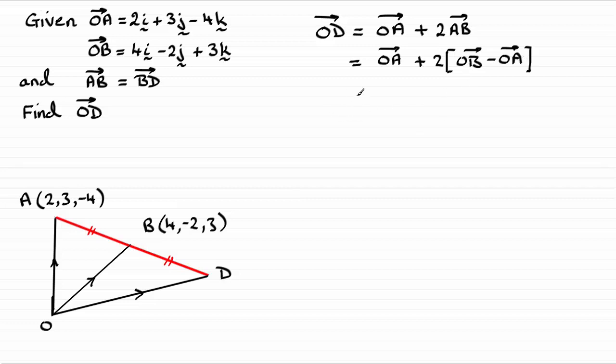Now, all I need to do is open up this bracket here, and you can see that I've got two lots of O to B, so we've got two lots of O to B, and then we've got O to A minus two lots of O to A, so it's going to be minus O to A.